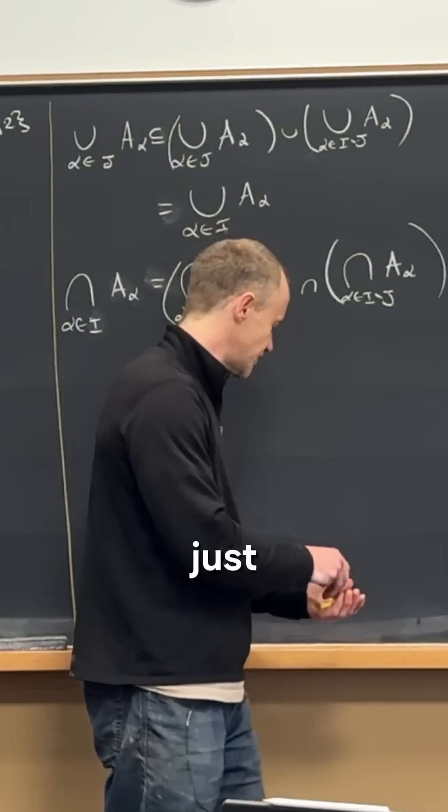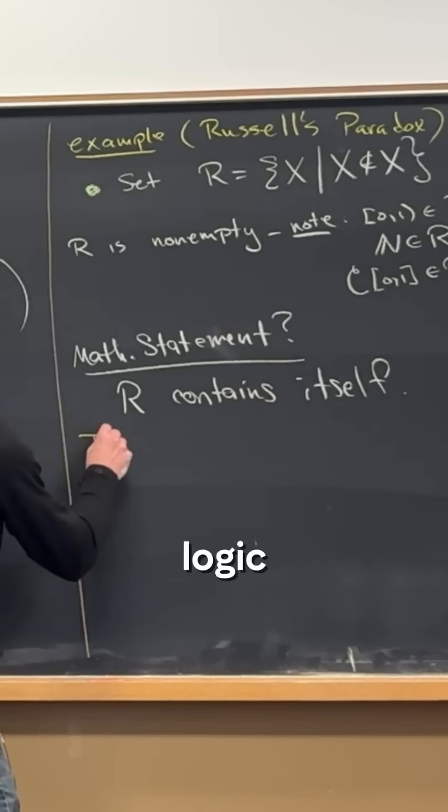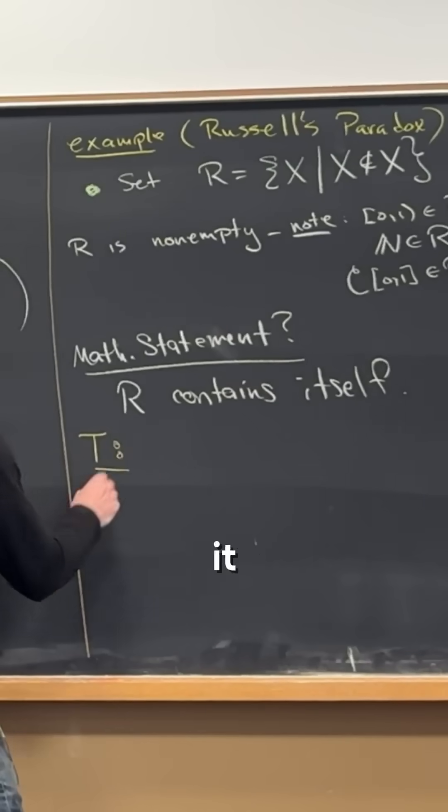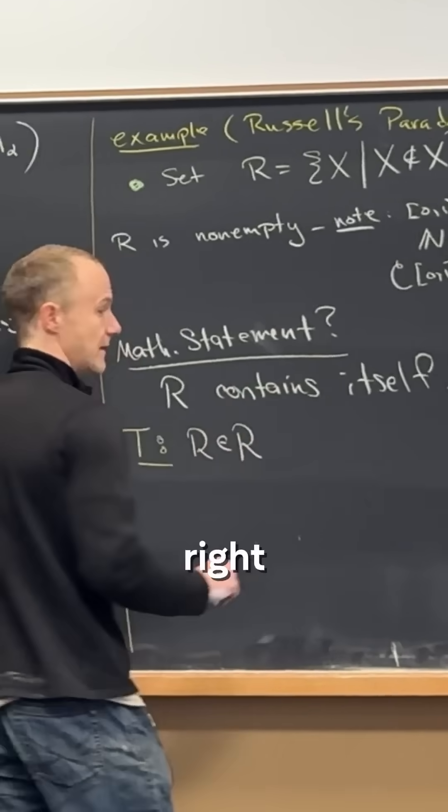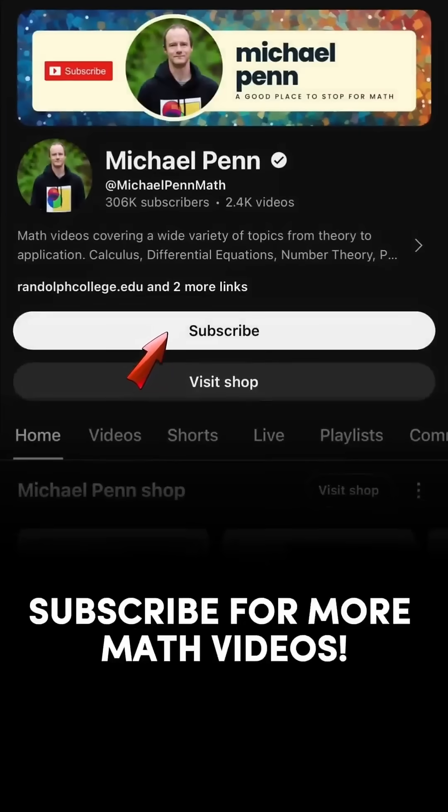So let's just follow the logic. Let's say, what if it were true? If it were true, then we would have R is an element of R.